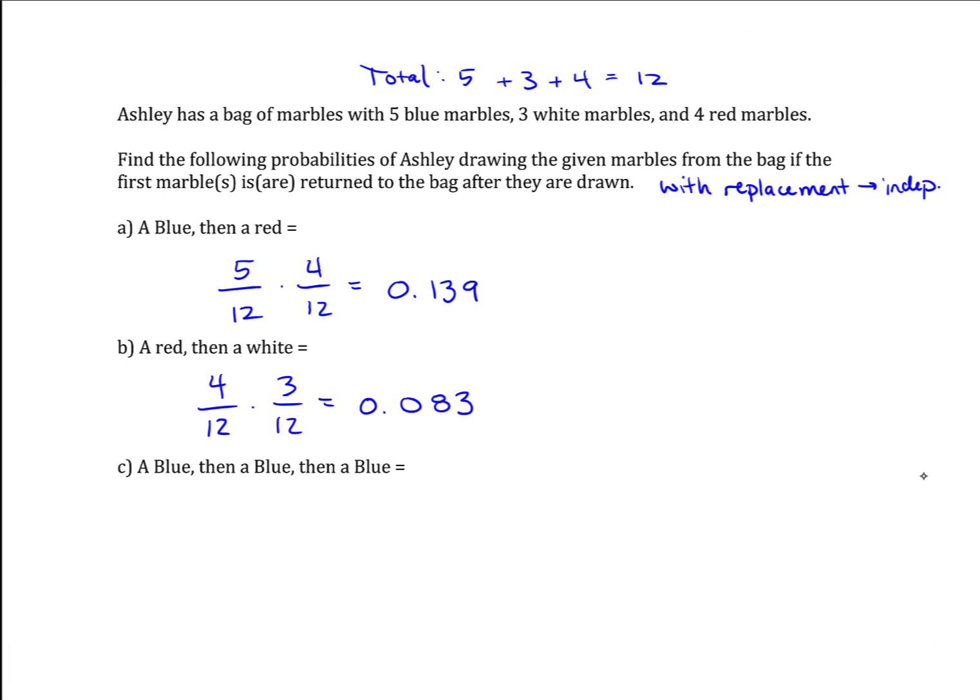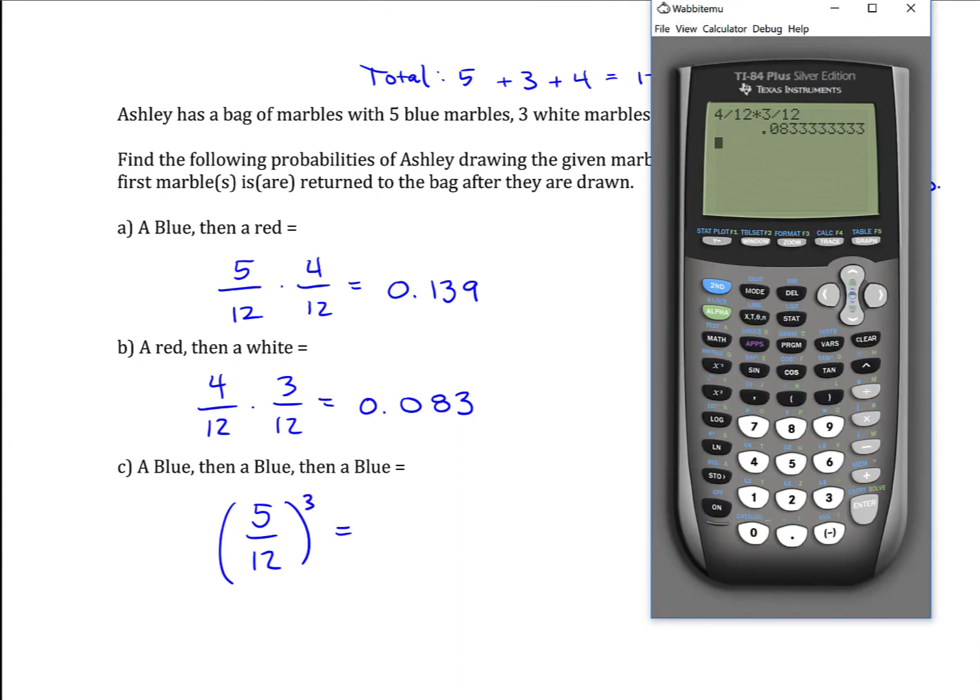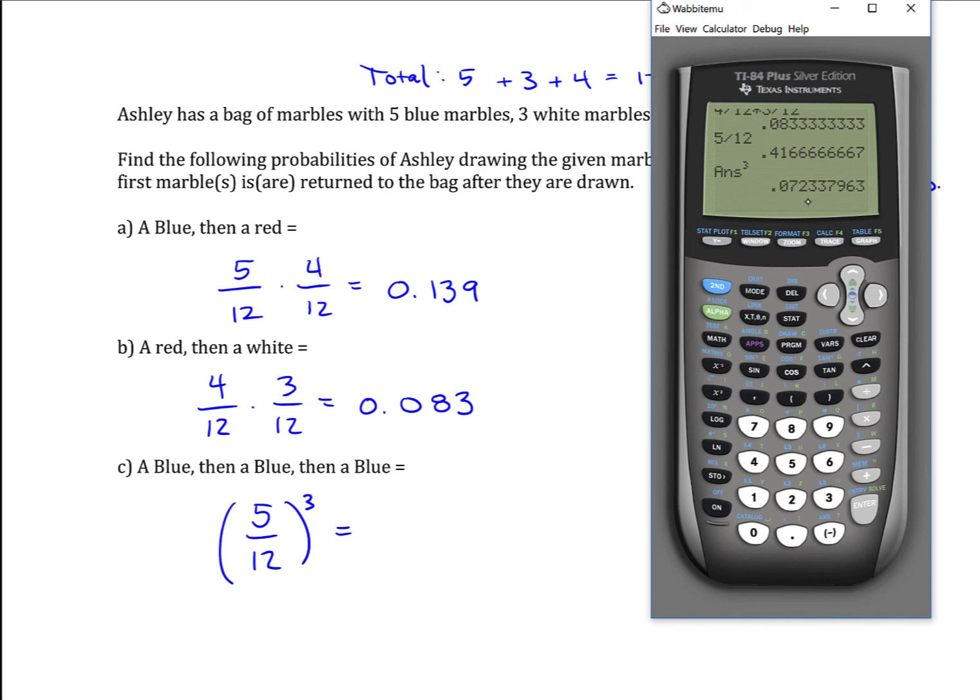A blue, then a blue, and then a blue - three marbles drawn this time. The first one being blue has a 5 out of 12 possibility. Since these are independent and they're not changing from one event to the next, we can raise that to the third power to get the remaining events. So 5/12 raised to the third power is 0.072.